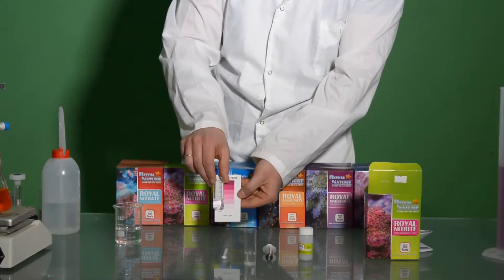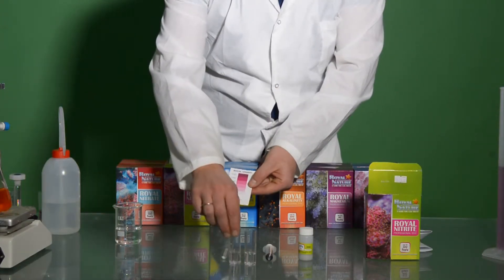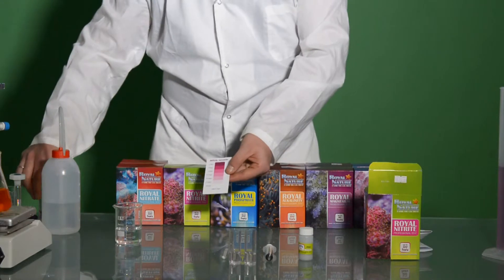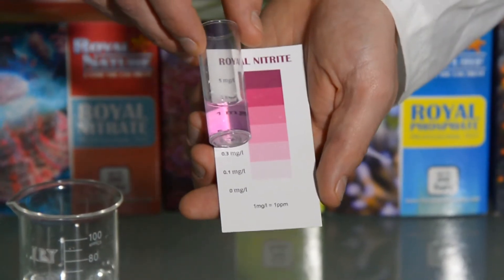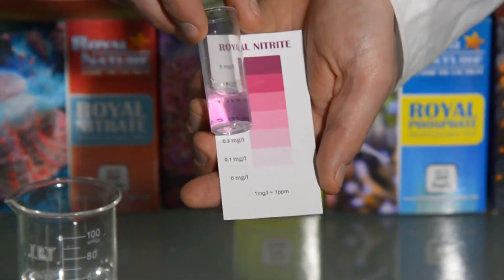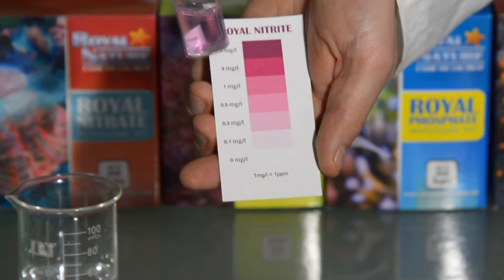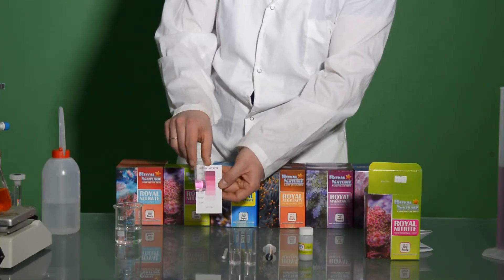That was prepared in the lab. We can see the color. The second one would be 0.5ppm. It can clearly be seen which is pink, and this is the color that you will find if you have 0.5ppm of nitrates in your tank.